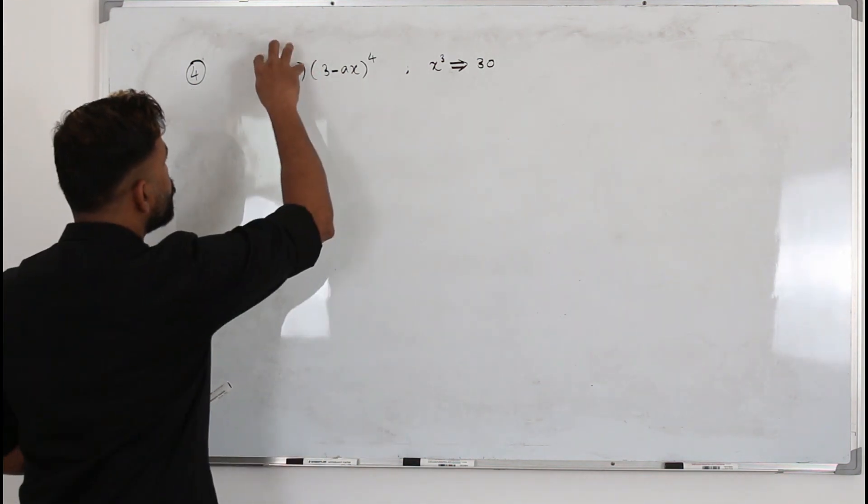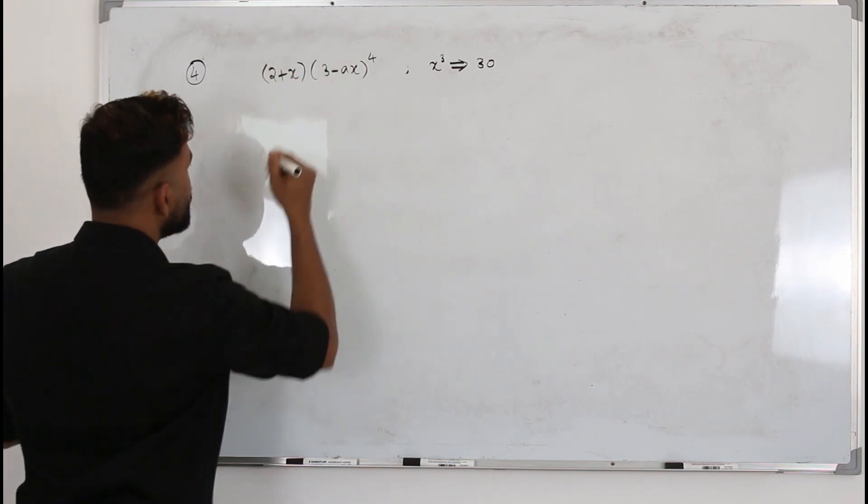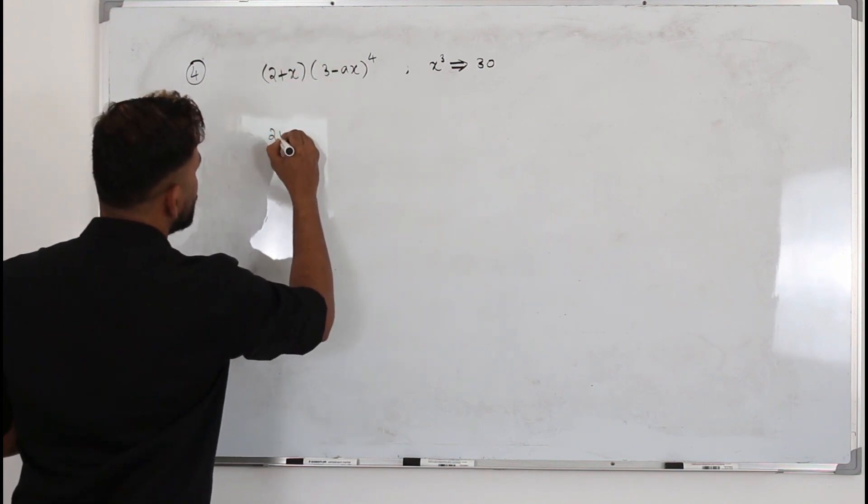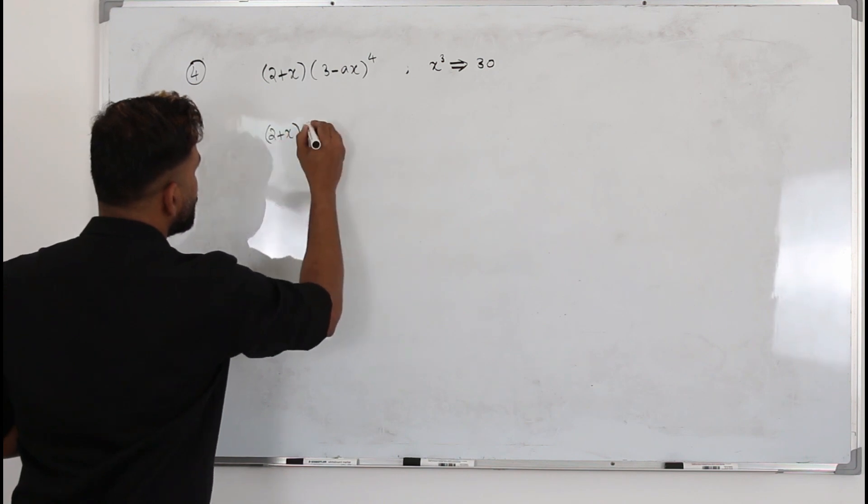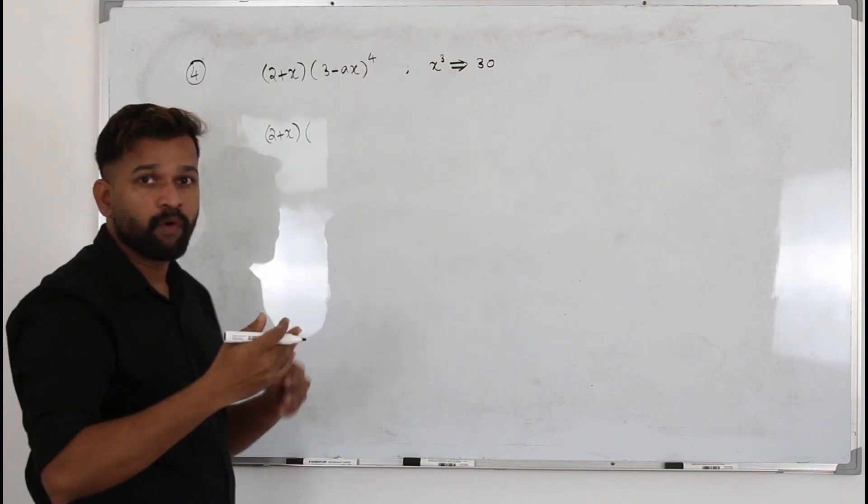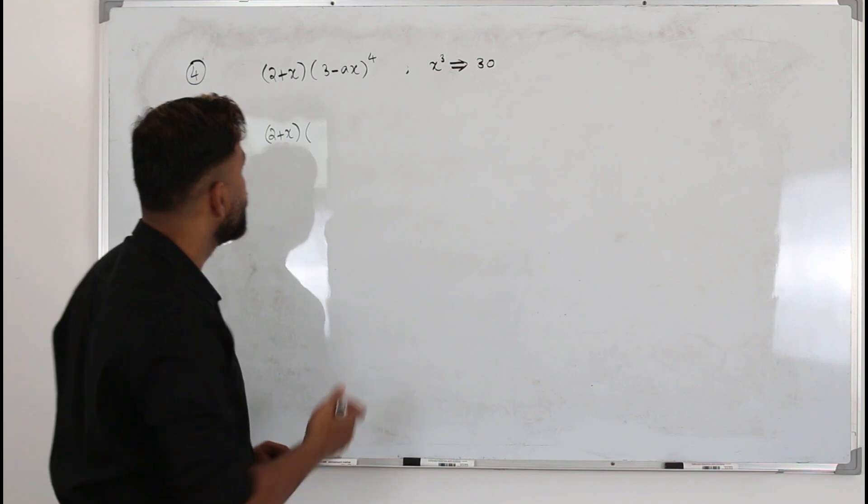Now the first expression has only power 1, so keep it as it is: 2+x. The second one has power 4, so we need to expand it using binomial expansion.